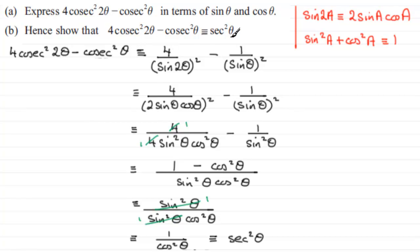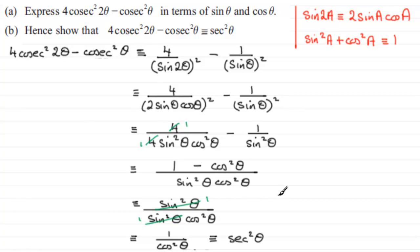So where does part a end and part b start? Well, it's difficult to say. In the mark scheme they tend to suggest a certain point where part a ends, and then they carry on for part b from there onwards. But it's still difficult in my opinion to know where one finishes and the other starts. Nonetheless, I hope this gives you some idea on how to go about this question.